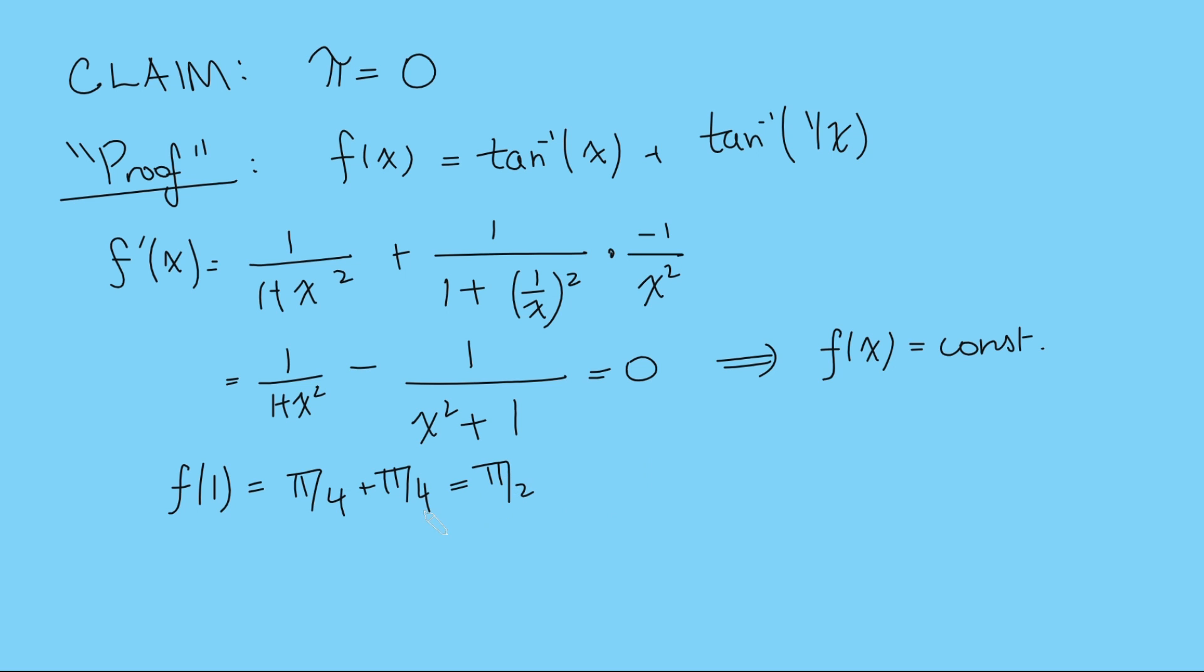Great, but what happens if we plug in minus 1 instead? Well, we get inverse tan of minus 1, and that's minus pi over 4. And if you plug in minus 1 into here, you get another minus pi over 4, so that gives you minus pi over 2. And so therefore, pi over 2 equals minus pi over 2, and so adding pi over 2 on both sides, I get pi equals 0, and there is my proof.